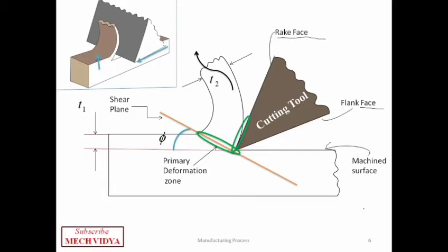The secondary deformation happens when the chip rubs vigorously with the rake face of the tool while flowing out. A tremendous amount of friction is generated here. There is an important parameter called the rake angle, which is the angle made by the rake face of the tool with a perpendicular drawn at the tool tip.